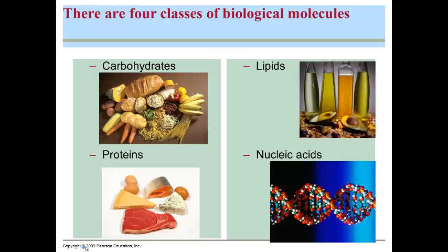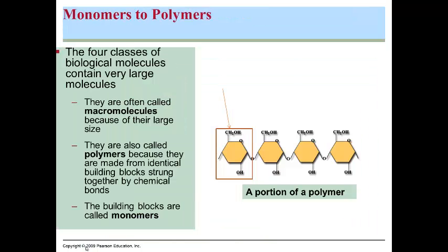Recall the four classes of biological molecules. Each of these represents a group of molecules with similar characteristics and structure. Each of the four classes are often called macromolecules or polymers. In each class they are made of repeating subunits that are referred to as monomers. The monomers will be the building block for making the large macromolecule within each group.